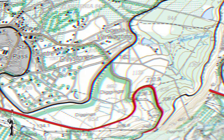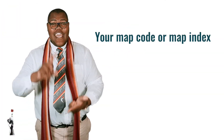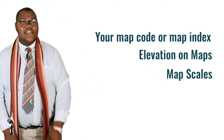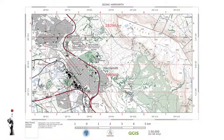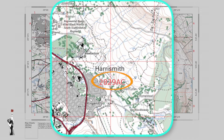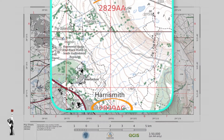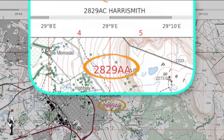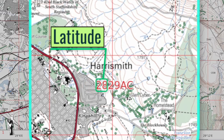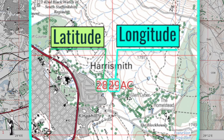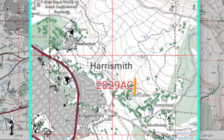I'm going to run through some important aspects of topographic maps: map codes or map index, elevation on maps, and map scales. Starting with your map code or map index — all maps have one. Think of the index of a book. It is the specific location of the mapped area in relation to others. The first two numbers refer to the latitude of the mapped area and the following two refer to the longitude.